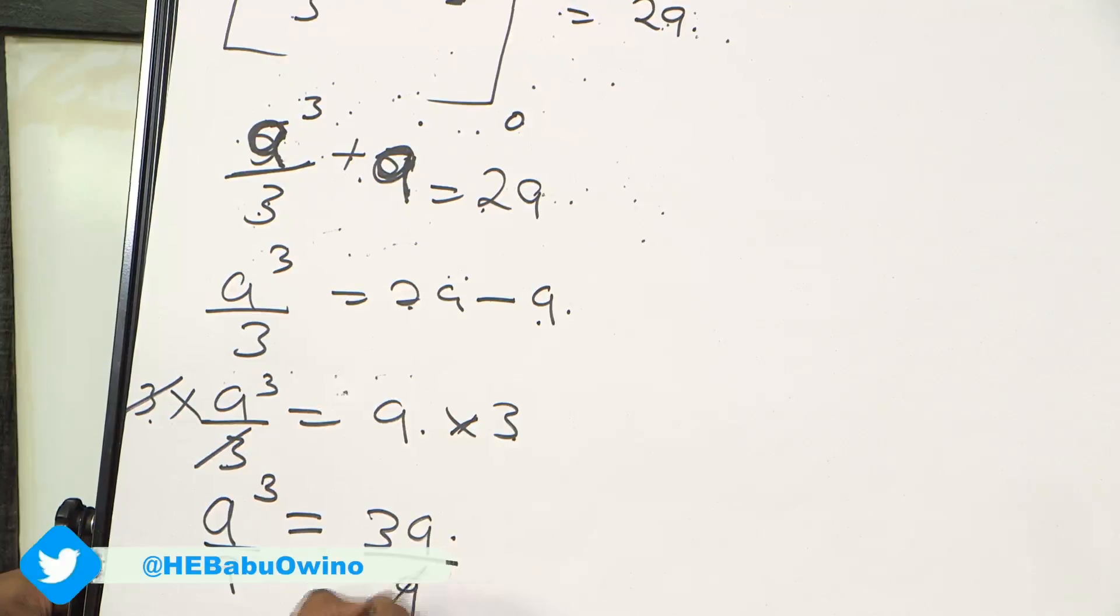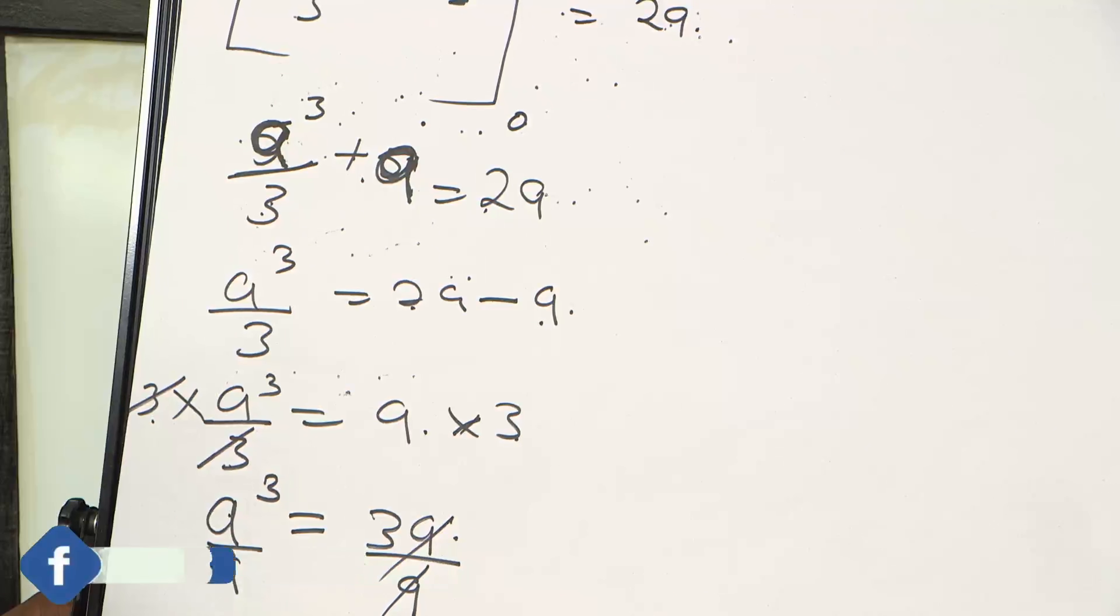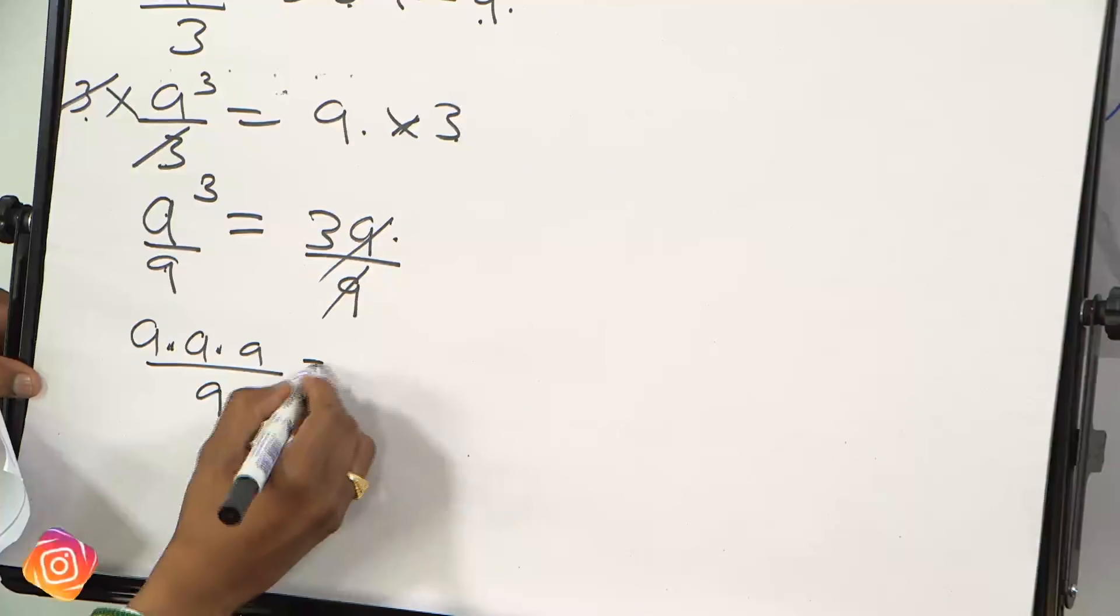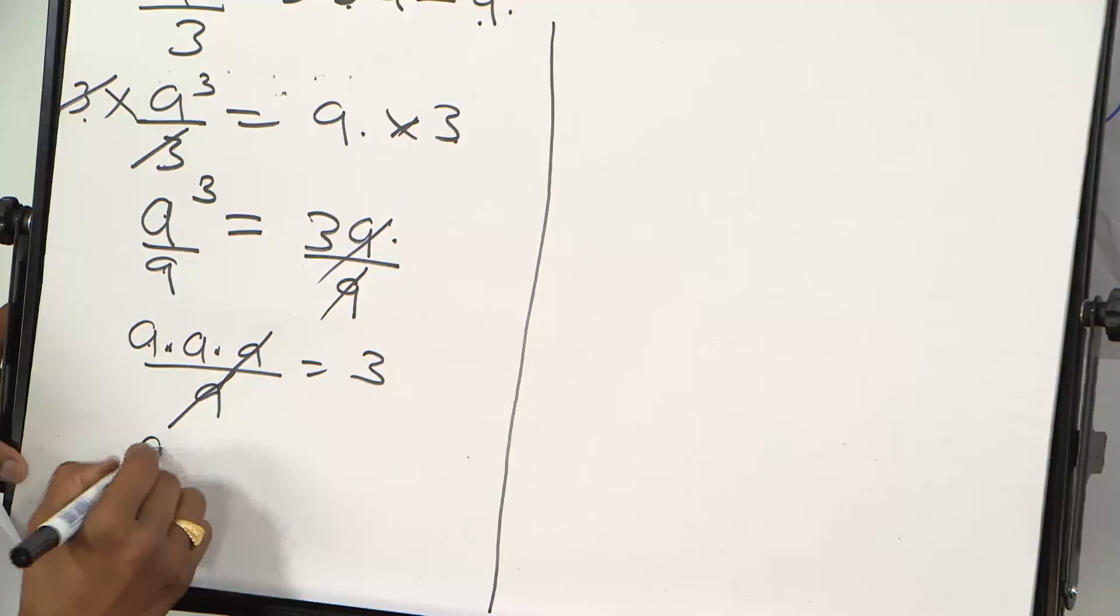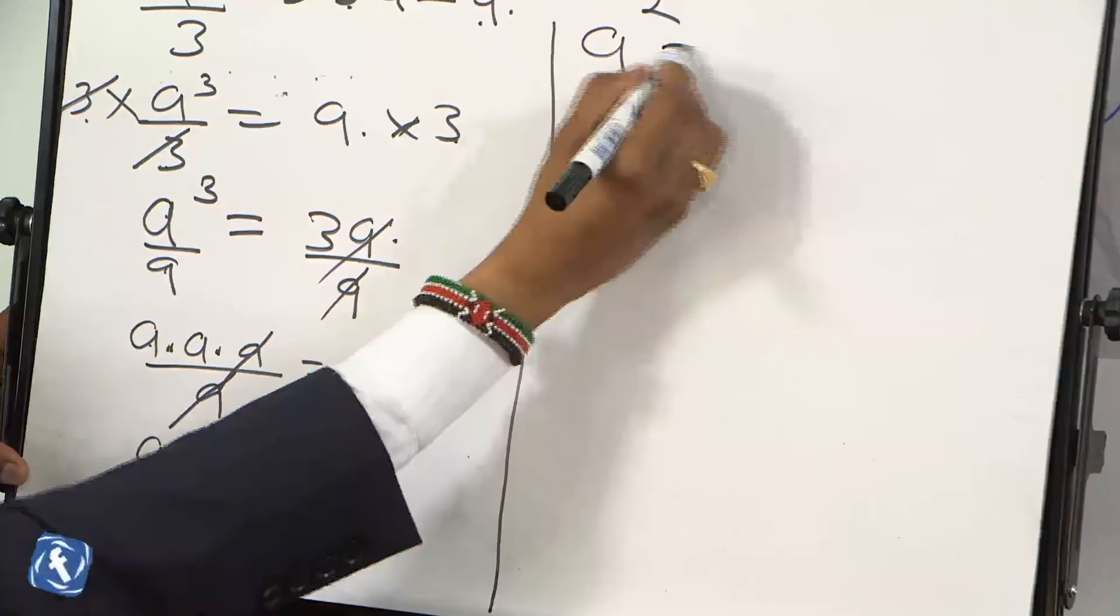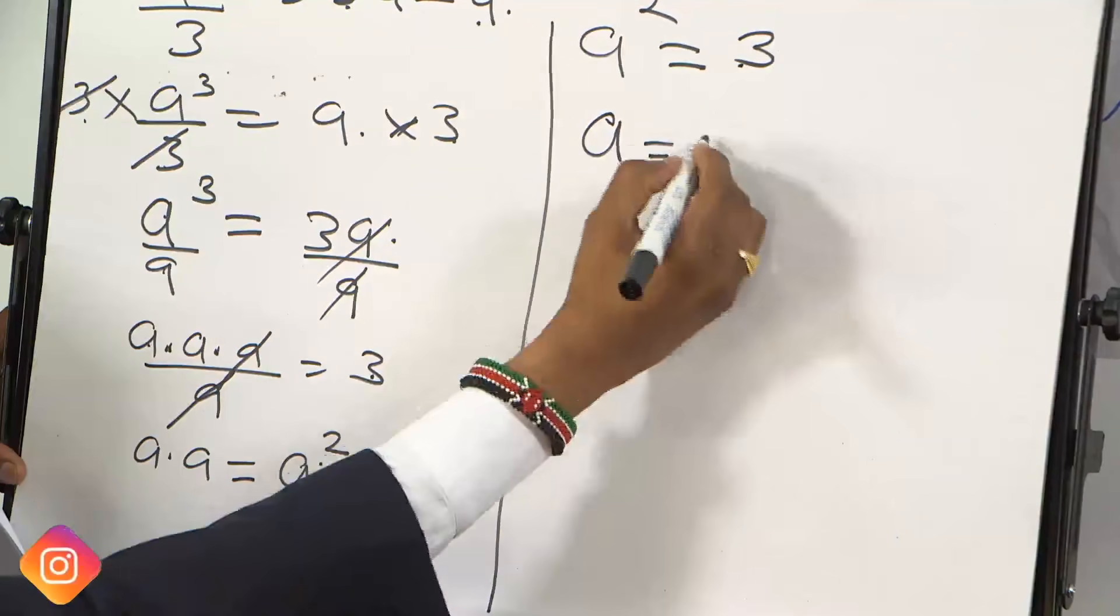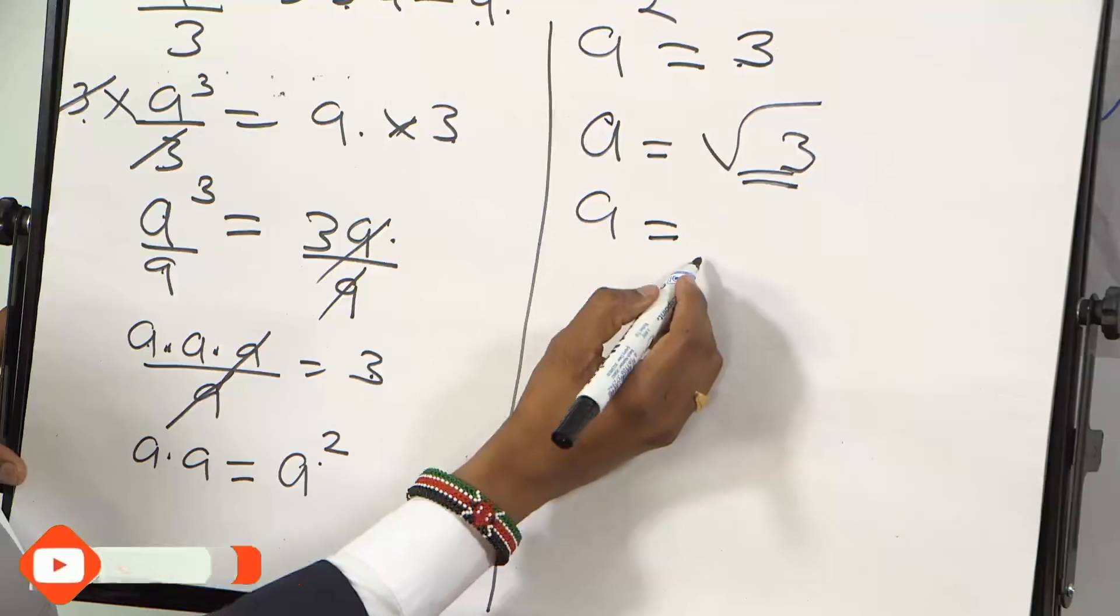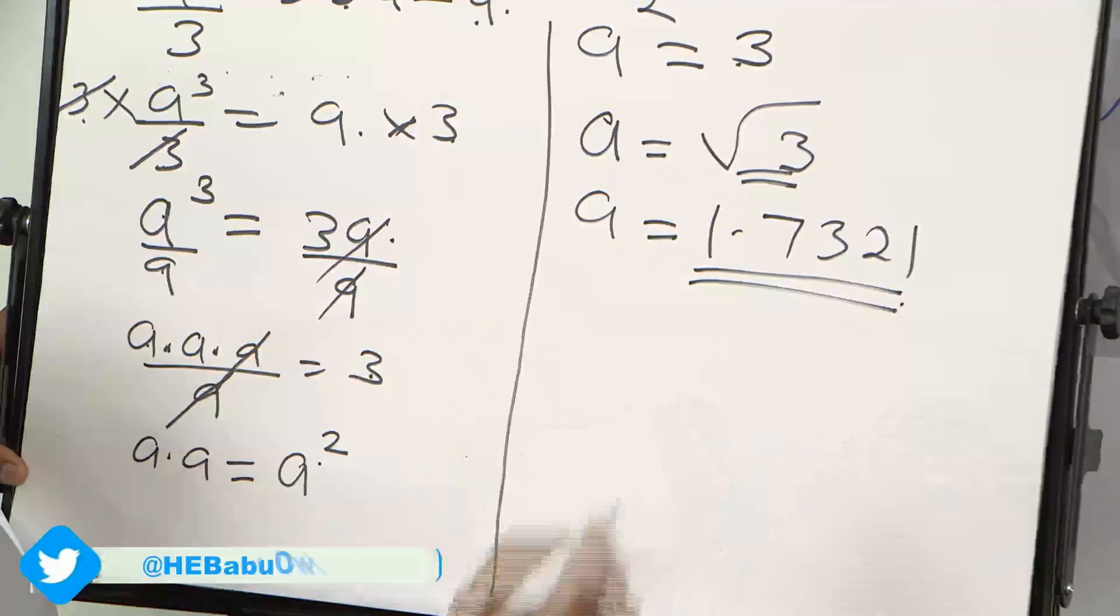Then we can further simplify by dividing by A because A is common. So A and A cancels. Therefore if you divide by A raised to power 3, it's like saying A times A times A divided by A equals to 3. So from here, A can cancel one A, then you remain with A times A, which can be written as A squared. So A squared equals to 3. If you want to find the value of A, you find the square root of 3. So A is root 3, and the square root of 3 is 1.7321 from your calculator. That is the answer.